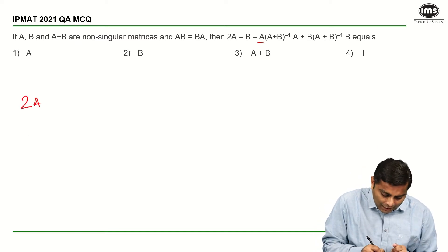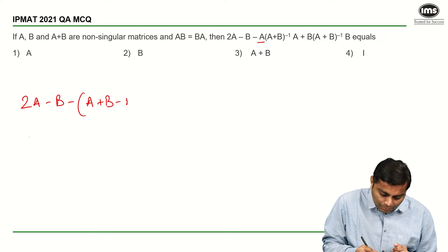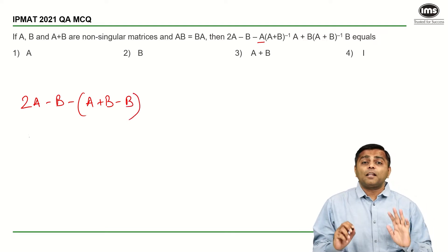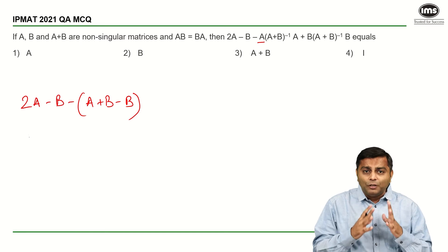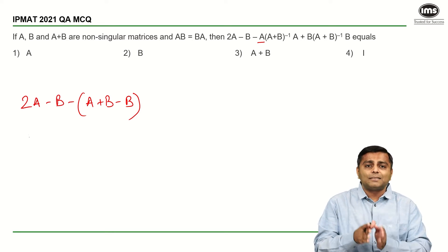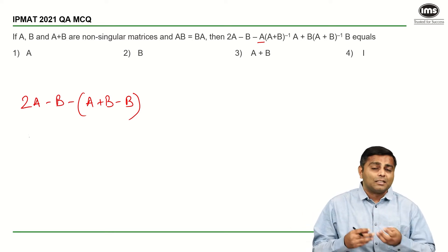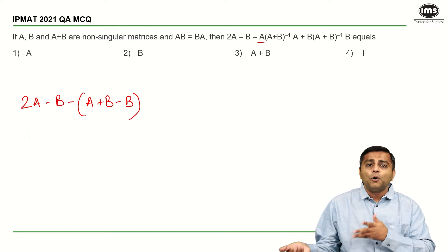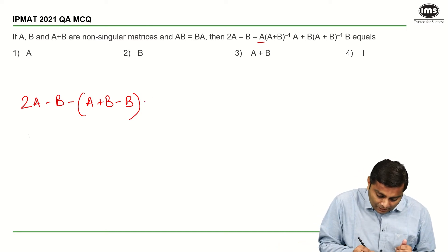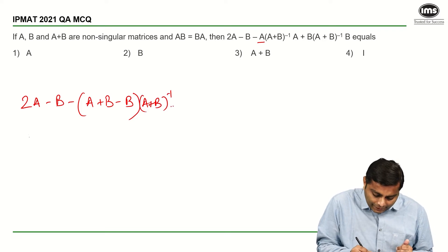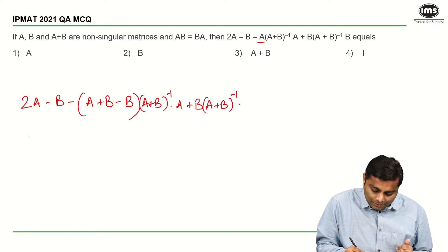I just start with 2A minus B minus, I will put this into the bracket A plus B minus B. I hope this is simple algebra that you understand. Instead of A only A, I am writing it as A plus B minus B. Obviously, B minus B will give us, in general algebra it gives us 0 here and this is multiplied with A plus B inverse, into A plus B times A plus B inverse times B.